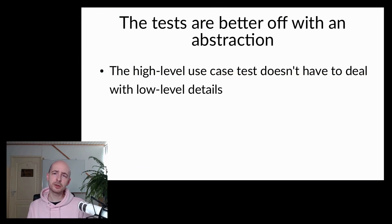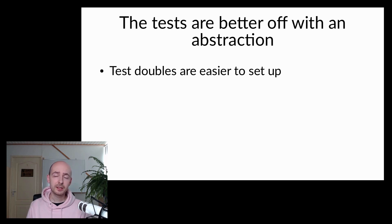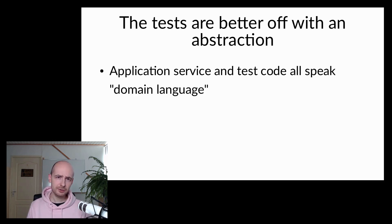The design feedback we get from using our own abstraction instead of the HTTP client directly is the following. The high-level use case test doesn't have to deal with any of the low-level details anymore. This helps us focus on the bigger picture, which is exactly the goal of a use case test. Test doubles are easier to set up, which makes the test easier to write as well. We can write more scenarios with different examples, illustrating different situations, and we don't have to worry about writing all that request-response setup code. I find the easier it is to write a test, the more tests will be written. And of course, that's a very good thing. Finally, both the application service and the use case test all speak the language of your domain, as opposed to something called TechSpeak. In theory, someone who doesn't know much about programming or HTTP APIs could still follow what's going on in both your application service and your use case test.